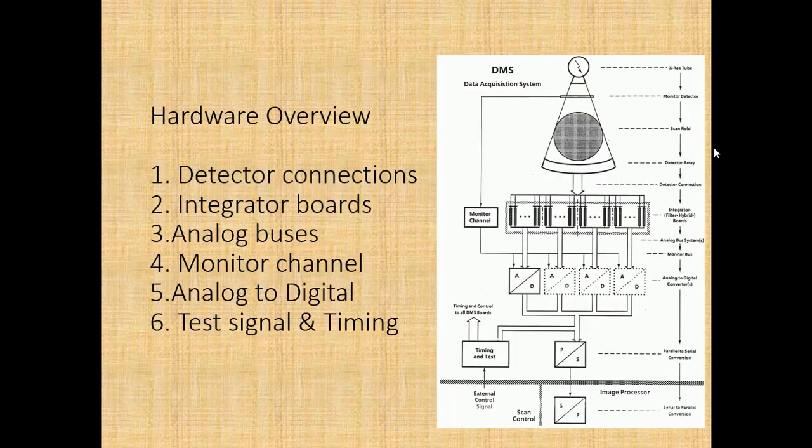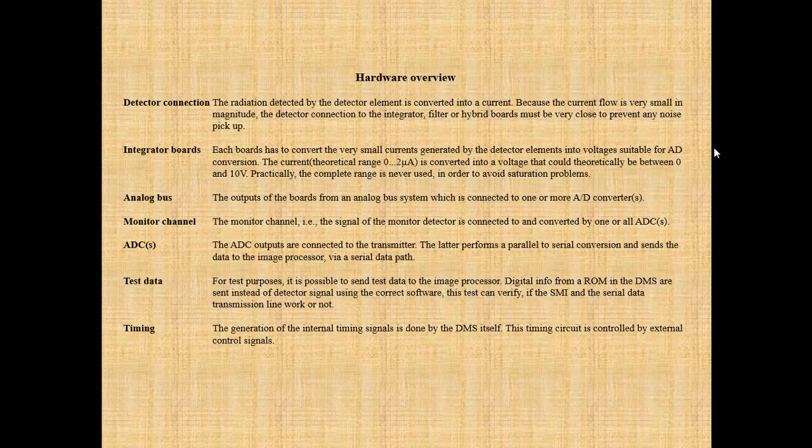Hardware overview covers: 1. detector connections, 2. integrator boards, 3. analog buses, 4. monitor channel, 5. analog-to-digital conversion, 6. test signal and timing. Regarding detector connections: the radiation detected is converted into a current. Because the current flow is very small, the detector connection to the integrator, filter, or hybrid boards must be very close to prevent any noise pickup.